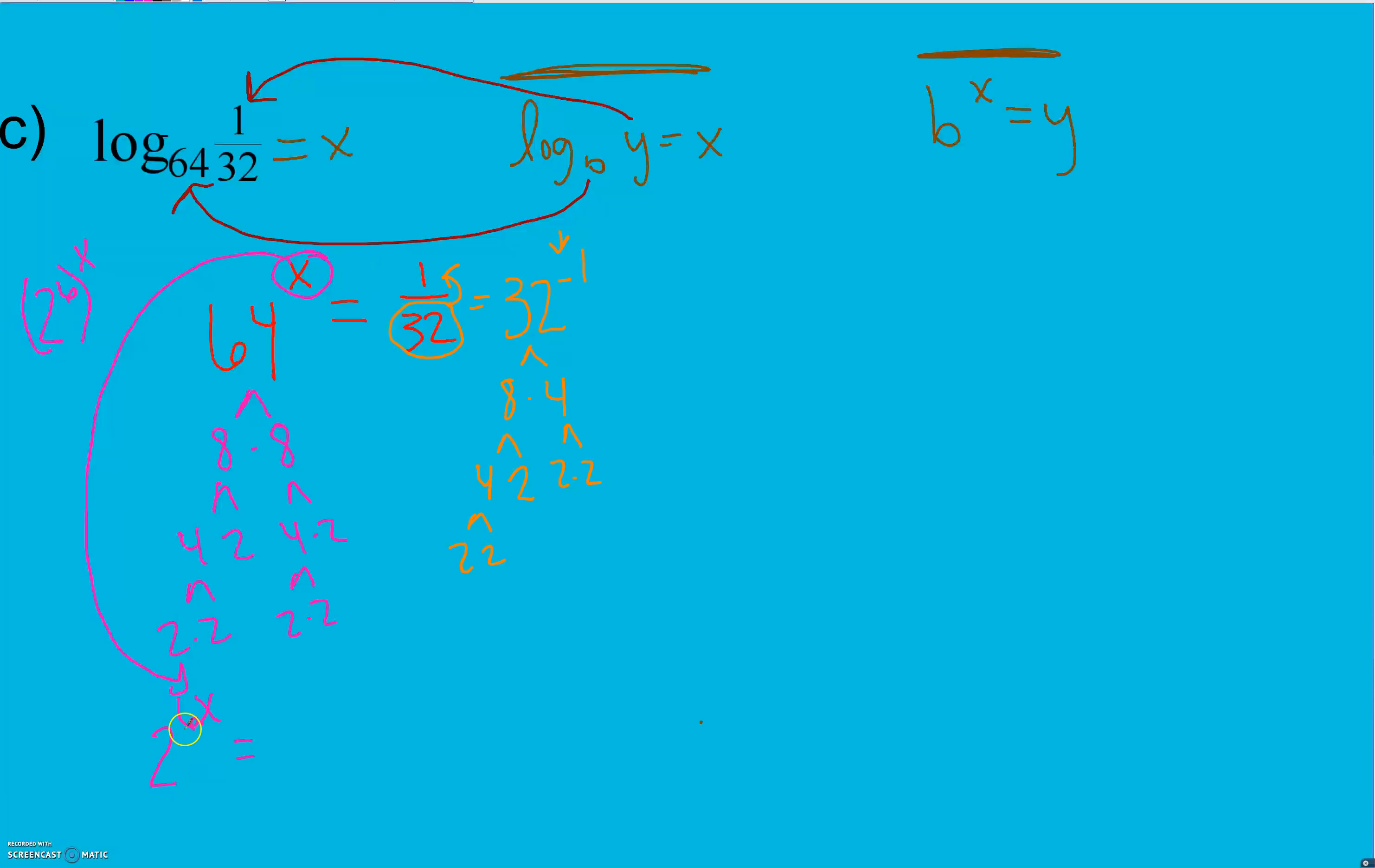So we have 2 to the 6th power equals, here we have 2 to the 5th power, to the negative 1st power. We're going to multiply those and get 2 to the negative 5th power.